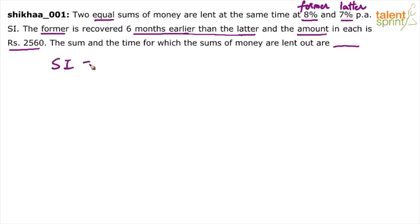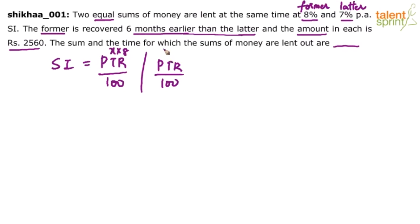Remember, the simple interest formula is PTR by 100. So even if you were confused with the wording, logically: the one at 8% was given for lesser time, and the one at 7% was given for more time. You should be able to sort this out logically.